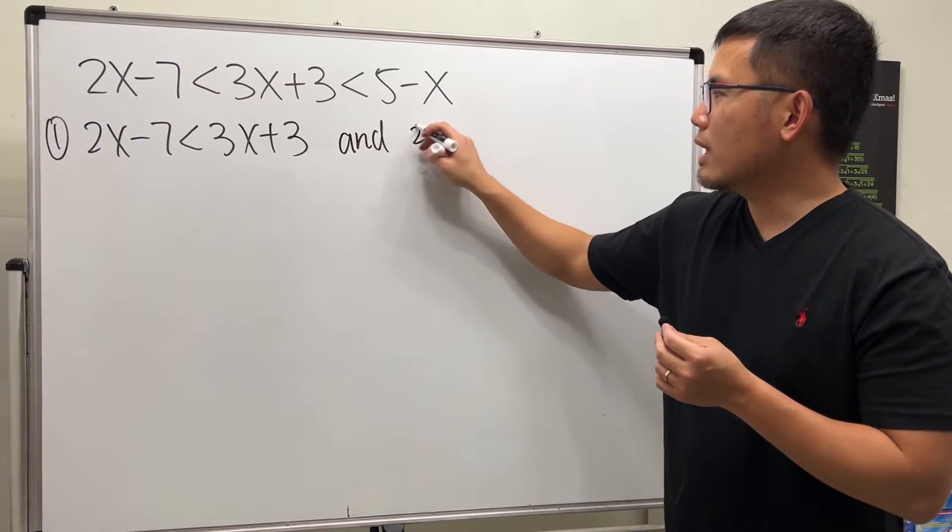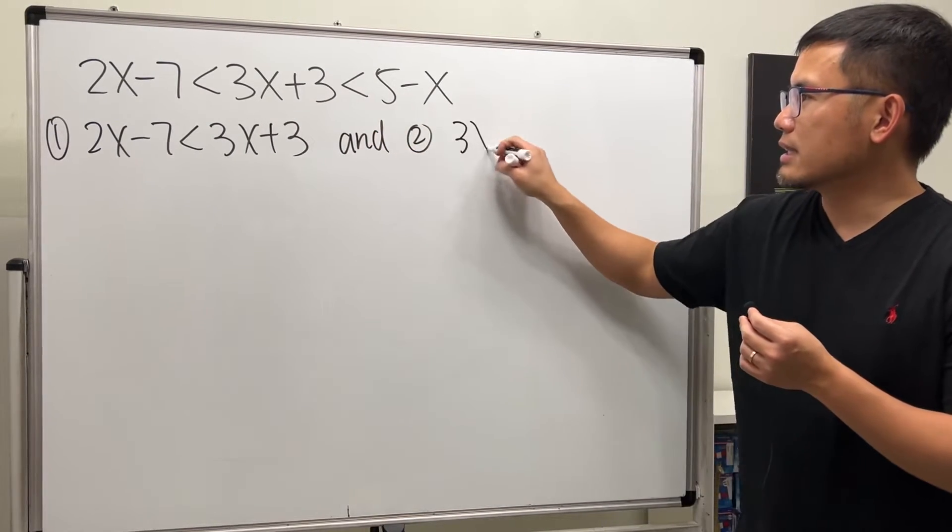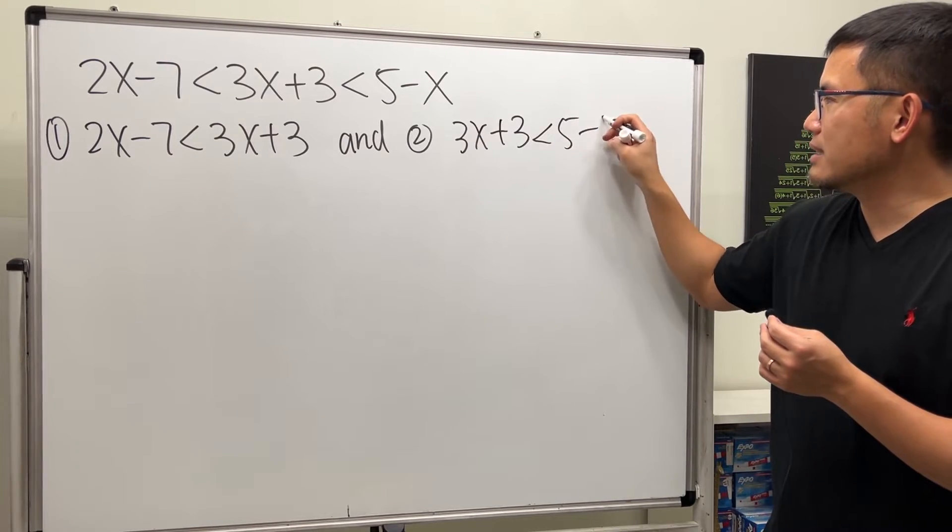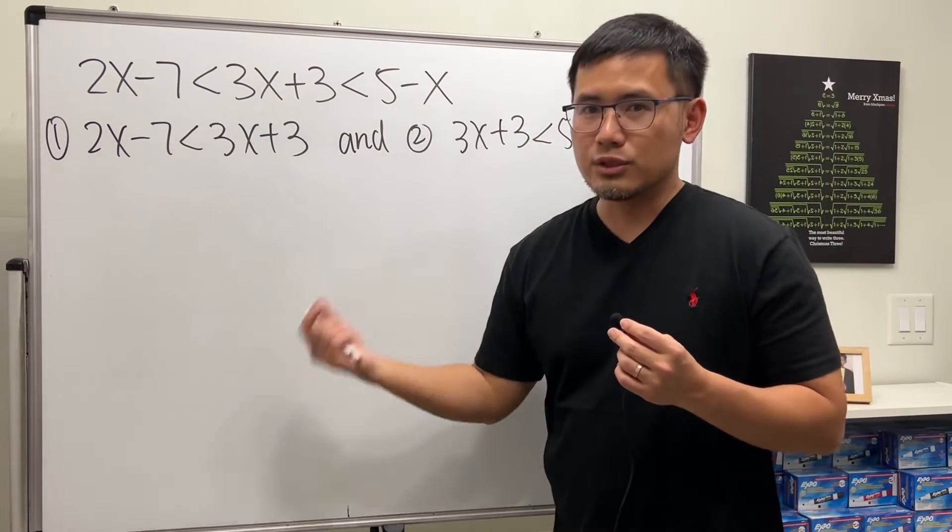And secondly, we also want this 3x plus 3 is less than 5 minus x. And then now let's just do that separately.